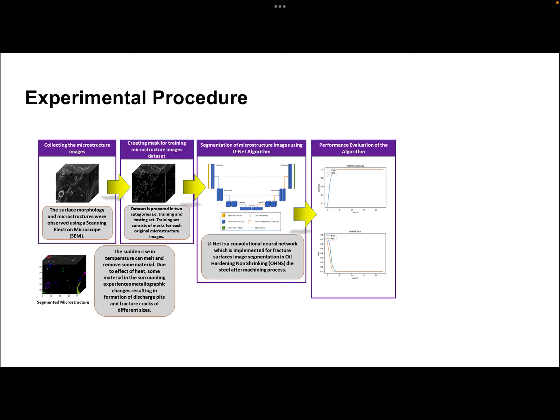This is the flowchart, or we can say this is the framework, for the implemented algorithm in our work. First of all, we collect microstructure images — that is, scanning electron microscope images — and we divide the microstructures into two folders. The first folder is the training folder and the second folder is the testing folder. In the training folder there are two types of subfolders: one contains the original microstructures and the other contains the masks of each microstructure.